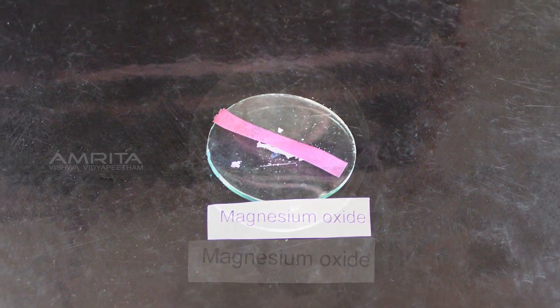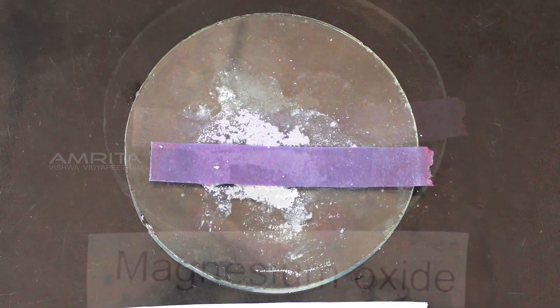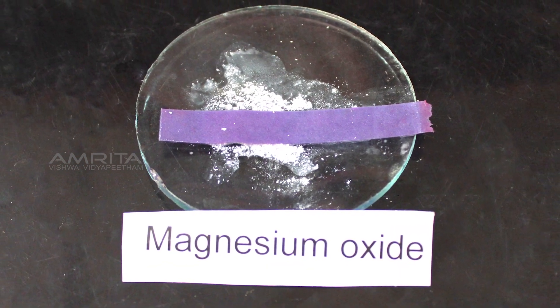You can now see that the red litmus turns blue. From this we can infer that magnesium oxide is basic in nature.